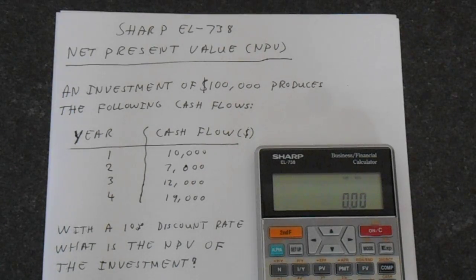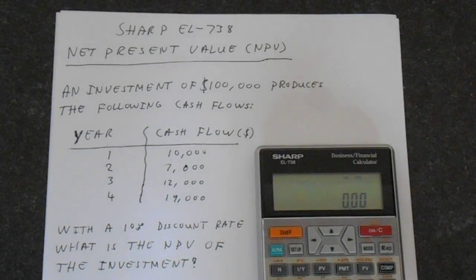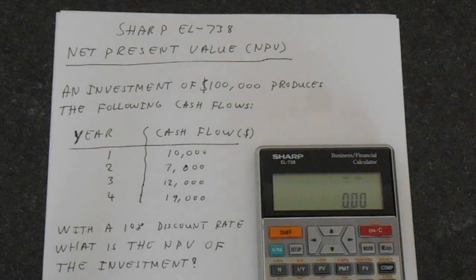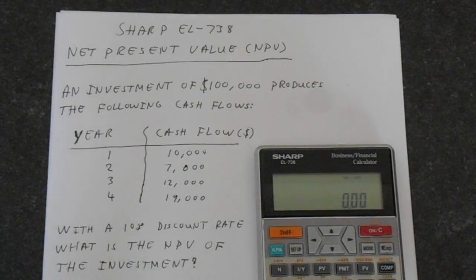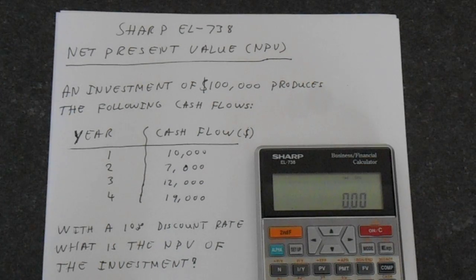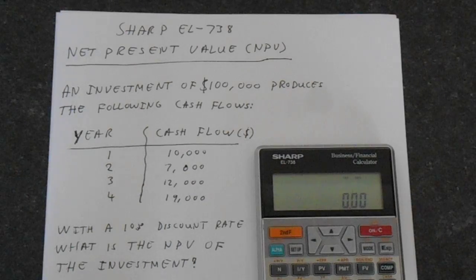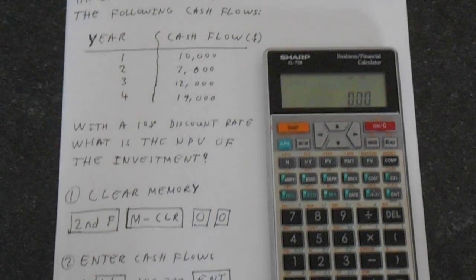We've got an investment of $100,000 which produces these cash flows, and we're going to use a 10% discount rate. So what is the net present value of the investment? Calculating this will tell us whether we would want to do the investment or not. If the net present value is negative, we don't want to carry it out. If it's positive, we should do the investment.